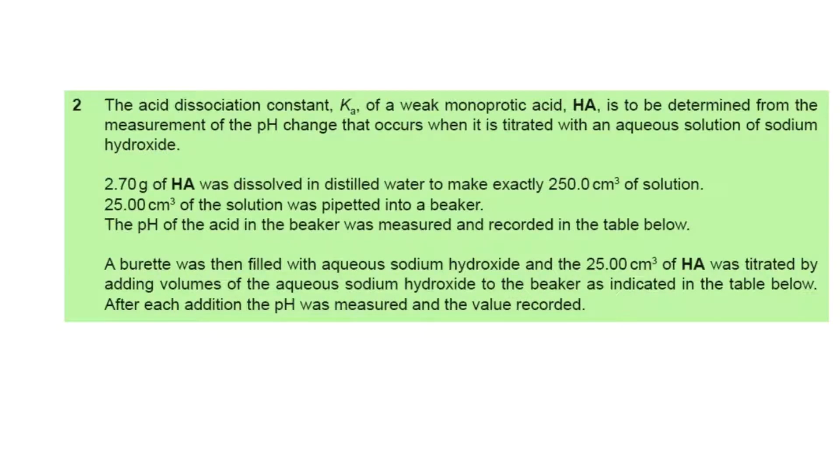Now question 2. Question 2 is regarding the acid dissociation constant from a weak acid HA. The mass of weak acid is 2.70 grams and it is dissolved to the exact volume of 250 cm³. From here, 25 cm³ is taken in the beaker.